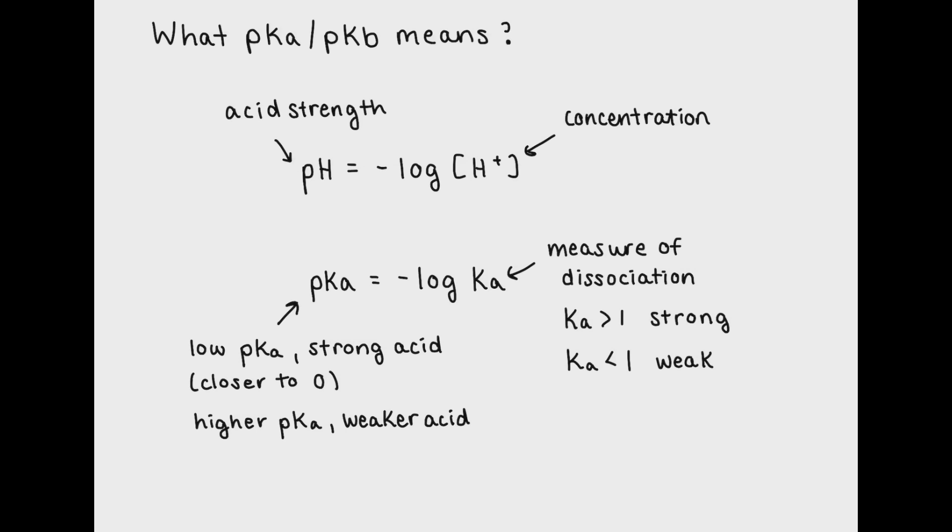A pKa that is closer to zero means basically the same as a pH that's closer to zero. There are more H plus ions in solution. This is why we use pKa's and pH's that are very close to each other when we make a buffer.